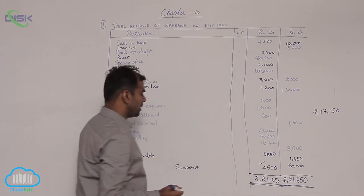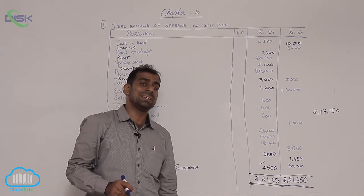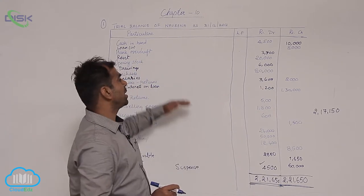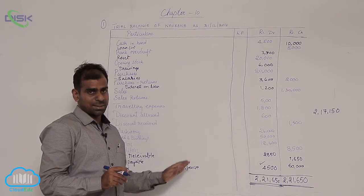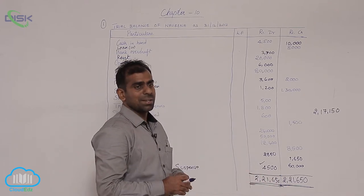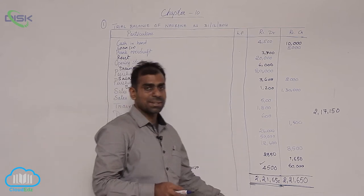This suspense account is used only when your trial balance does not agree. But you have to be very sure that all the balances you have taken are correct, then only there can be suspense. Otherwise, do not always put the difference to suspense account.